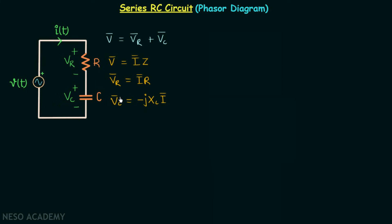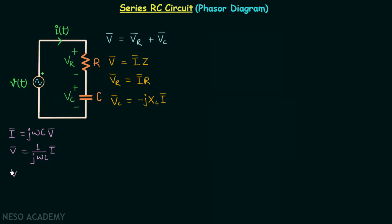Let us understand how we have VC phasor equal to that. From the phasor relationships for a capacitor, we had I phasor equal to jωC times V phasor. From this, V phasor equals 1/(jωC) times I phasor. Since 1/ωC is the capacitive reactance XC, and 1/j equals negative j, we get V phasor equal to negative j·XC times I phasor.